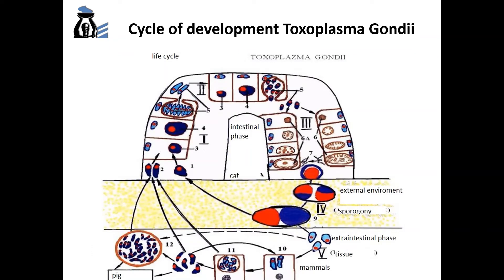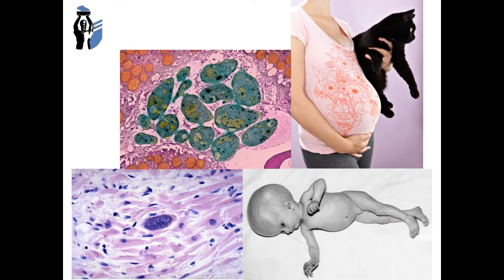There are many clinical symptoms of toxoplasmosis because cells of almost all tissues are affected: liver, muscle, spleen, lymph nodes, neural system, and others. This is explained by the different localization of the parasite.